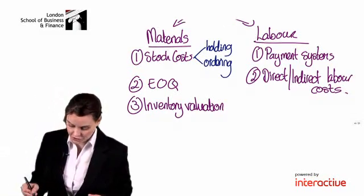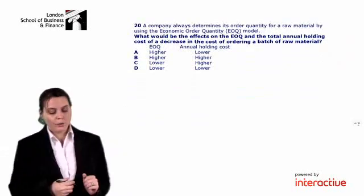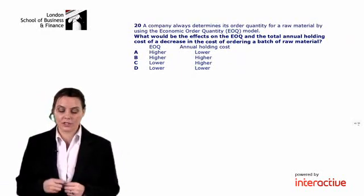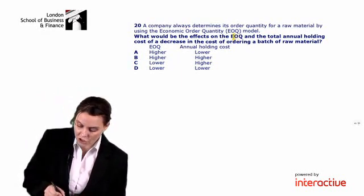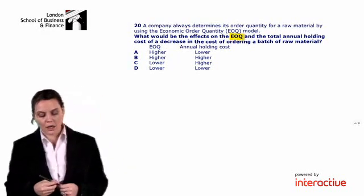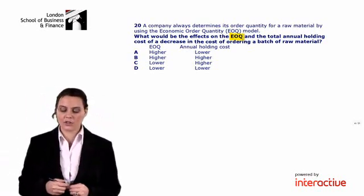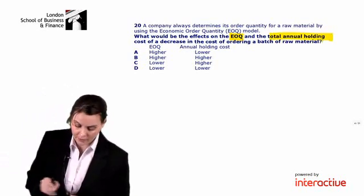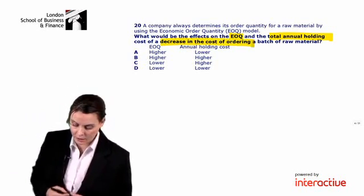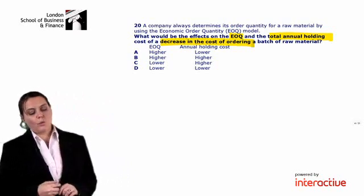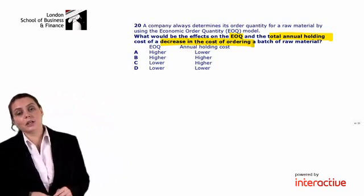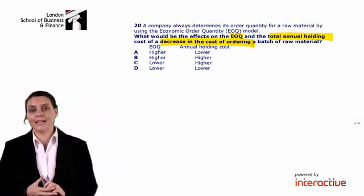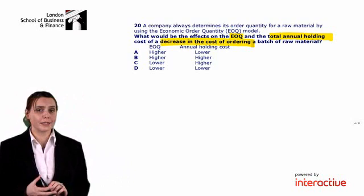Looking at our first question in this area: what would be the effects on the economic order quantity and the total annual holding cost of a decrease in the cost of ordering a batch of raw materials? We want to look at the effect a change in ordering cost has on our EOQ and our total annual holding cost.